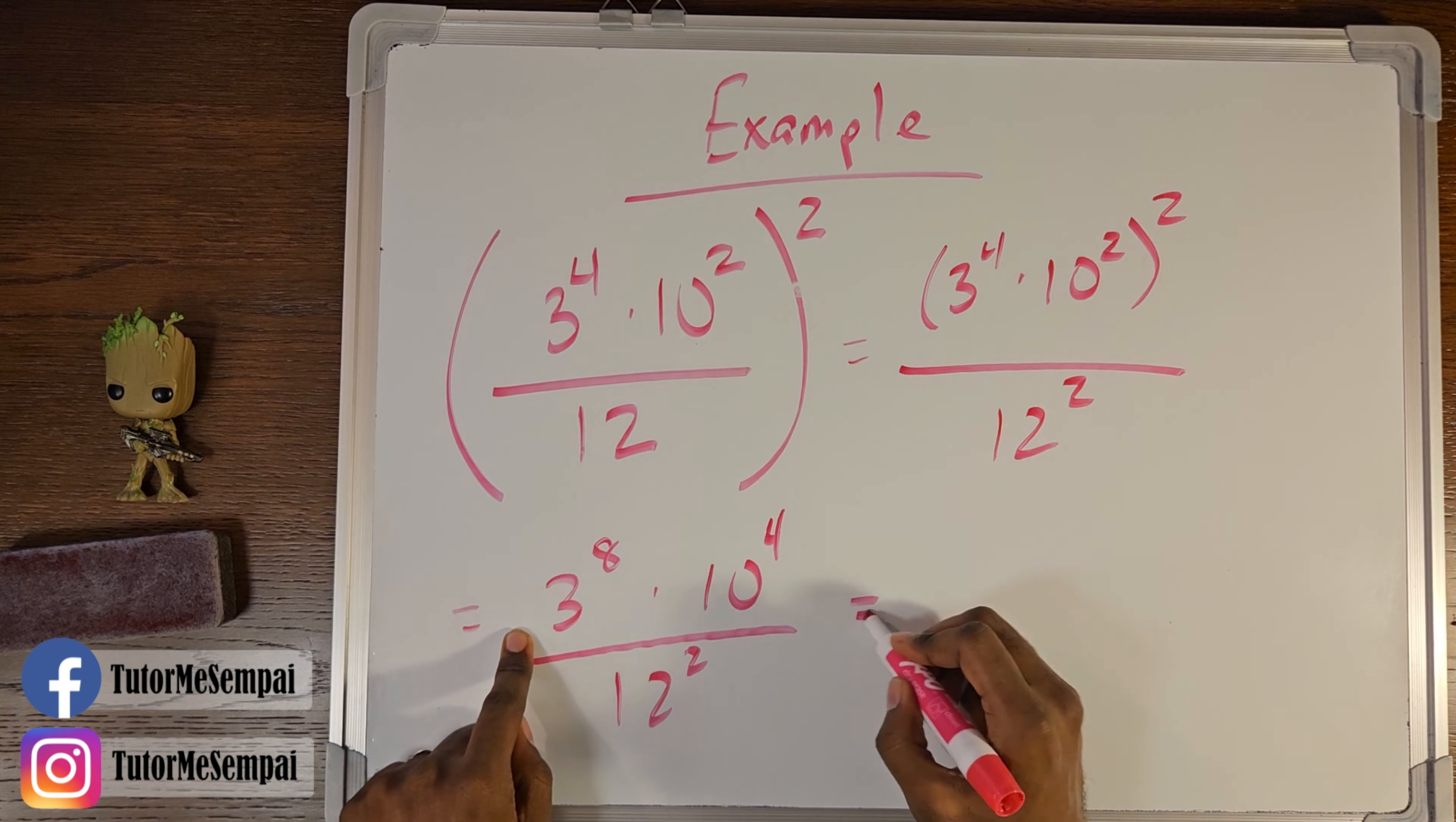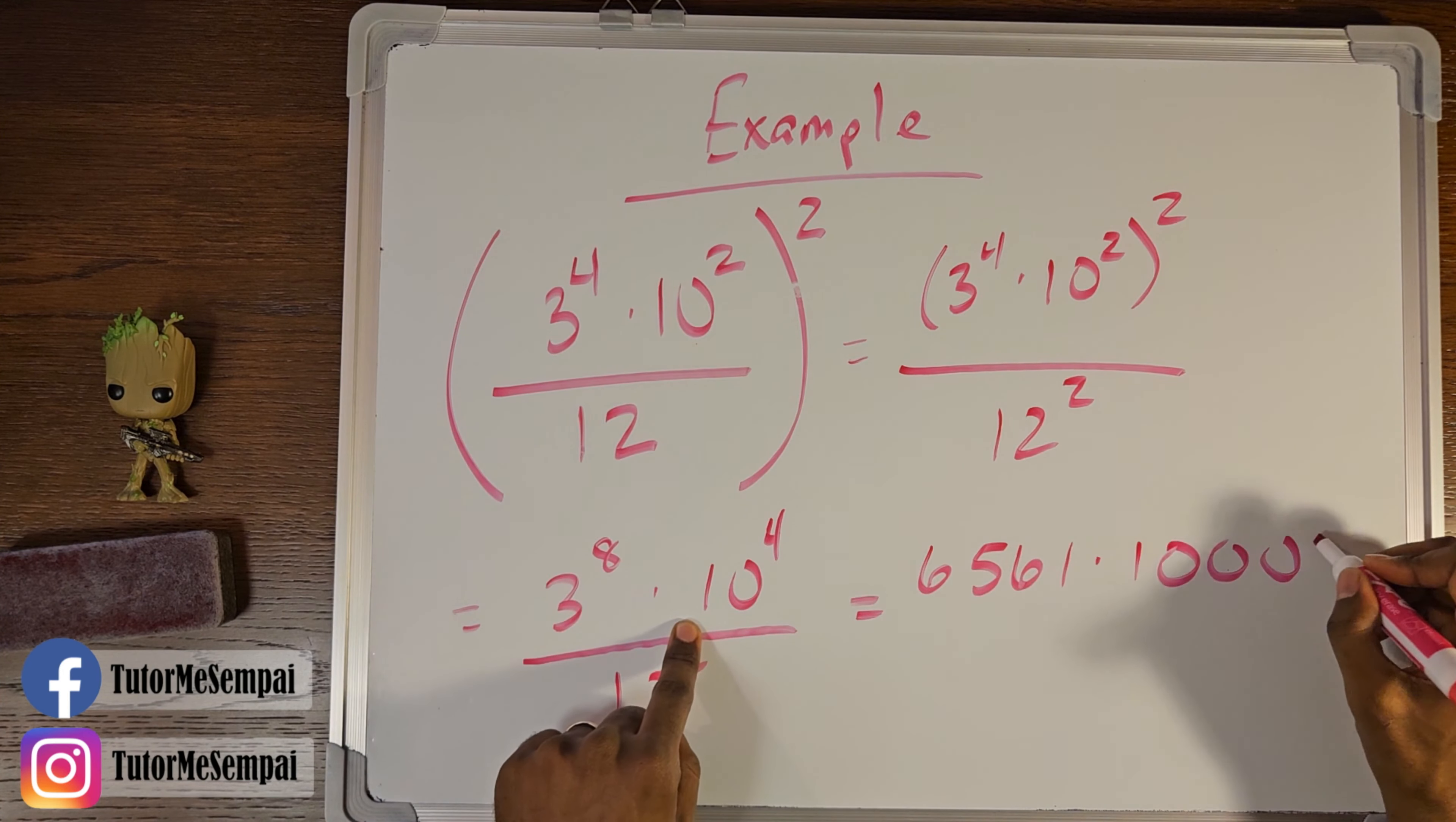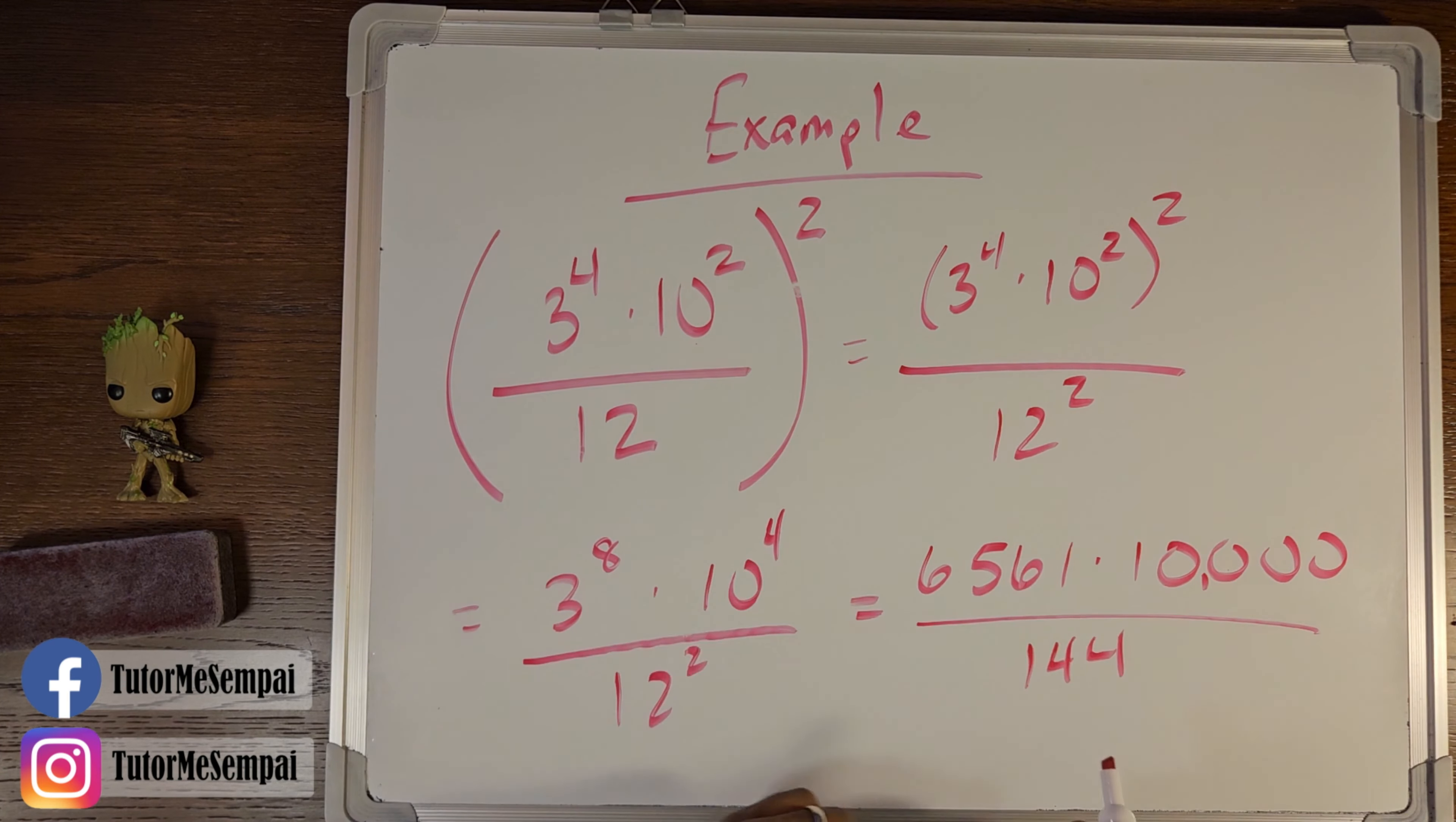So let's figure out what three to the eighth is. So three to the eighth power is going to be six thousand five hundred and sixty one. Ten to the fourth power is going to be ten thousand, and then it's all going to be over 144. Now you can plug all of this into your calculator and you're going to get the final answer of four hundred and fifty five thousand six hundred and twenty five.